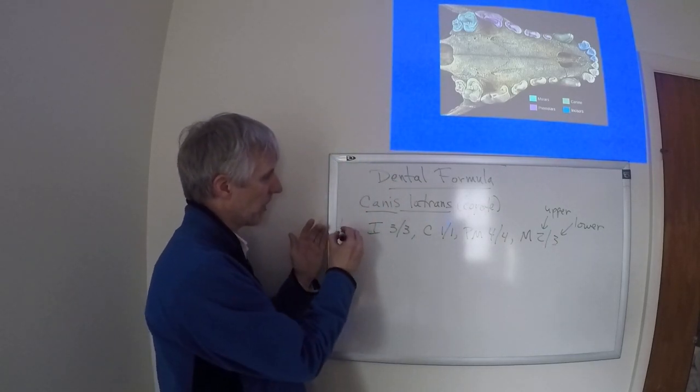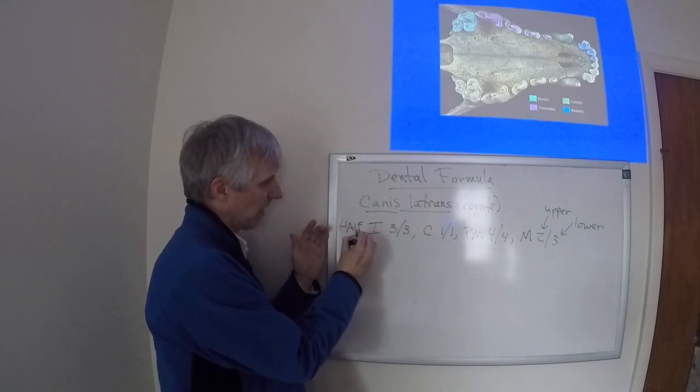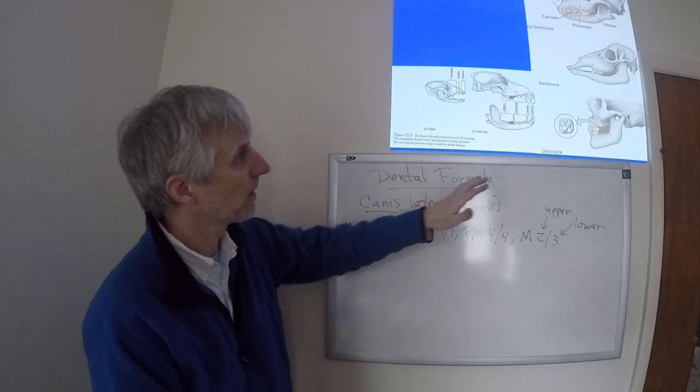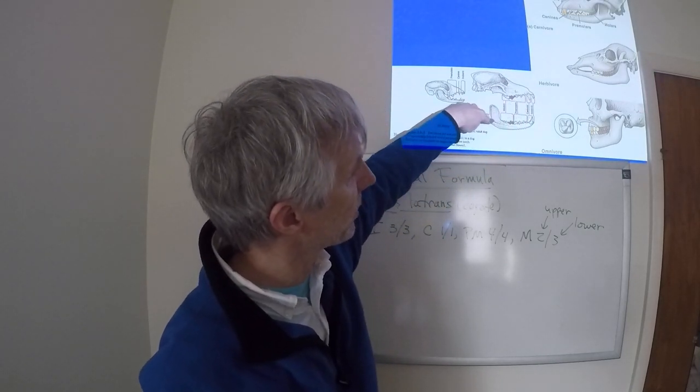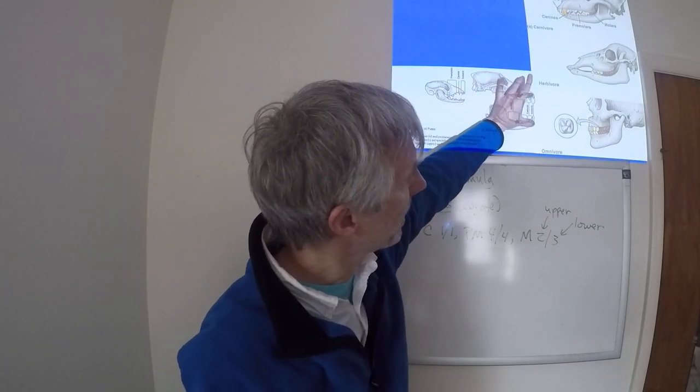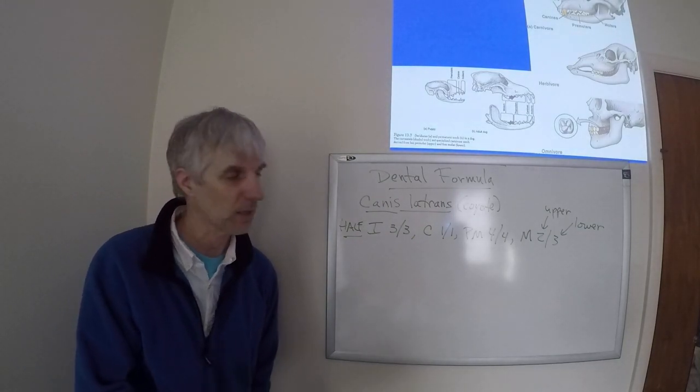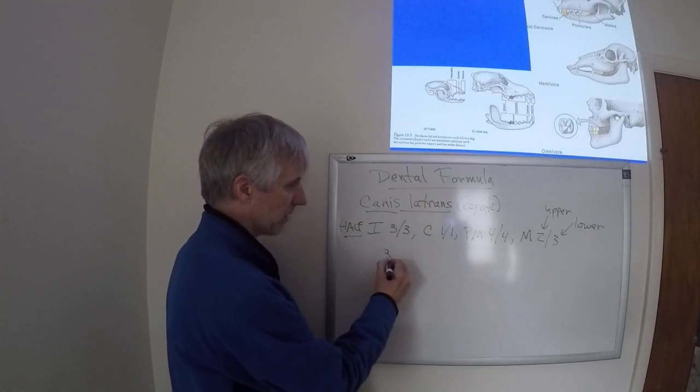Two molars in the upper and three molars in the lower. This is basically showing me half of the jaw, so we're looking at the teeth from this orientation and only keeping track of these teeth in the upper and lower jaw. It could also be represented like this.